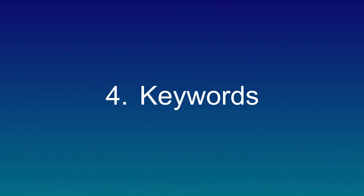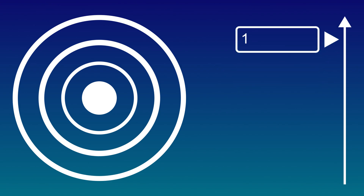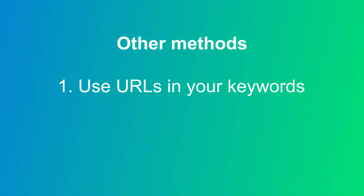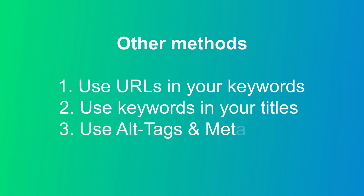Four, keywords are the search terms users use to reach a page. Google ranks websites relevant to the search keyword — the more specific your keywords are, the better the ranking your posts will get. Other methods to consider are: one, use URLs in your keywords; two, use keywords in your titles; three, use alt tags and meta tags.